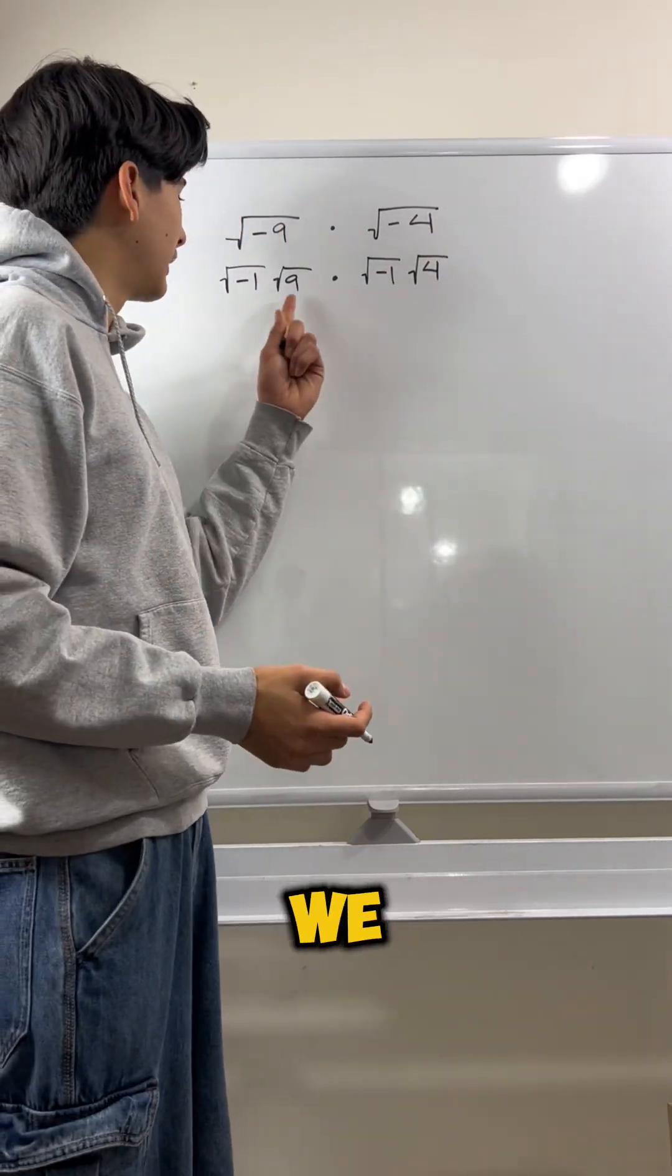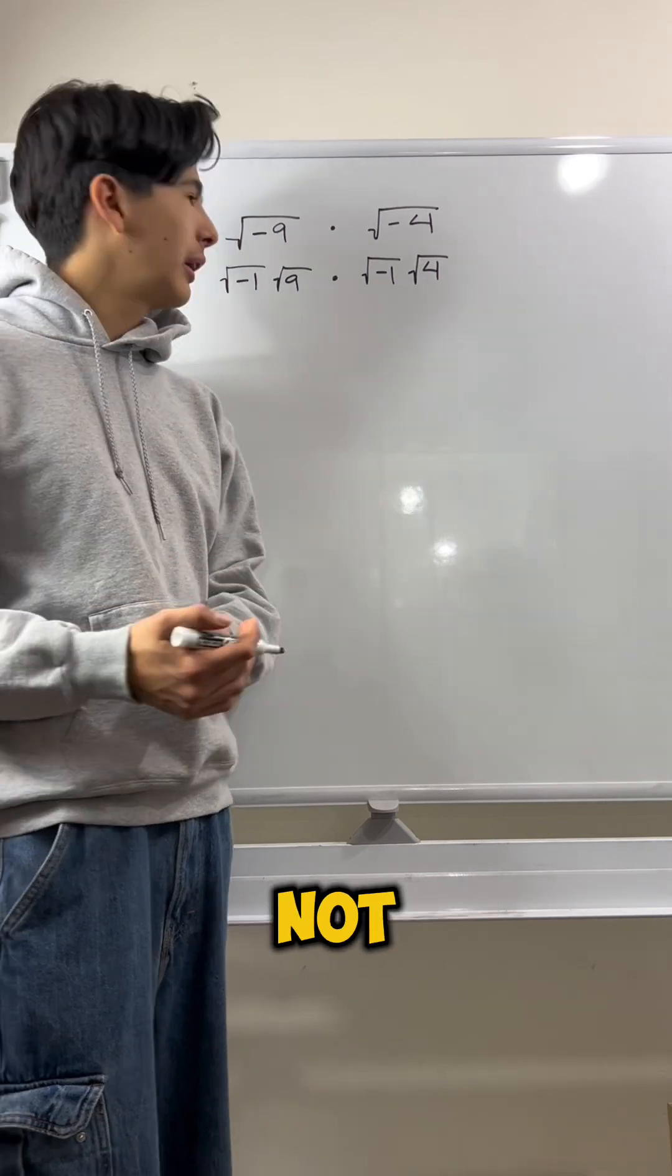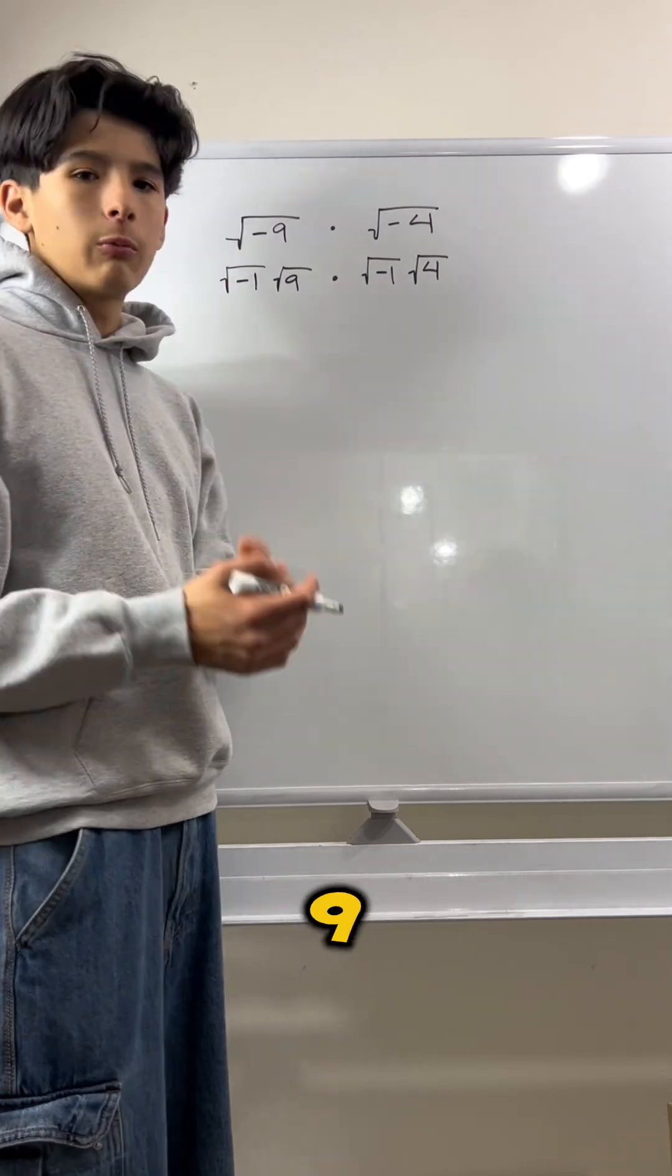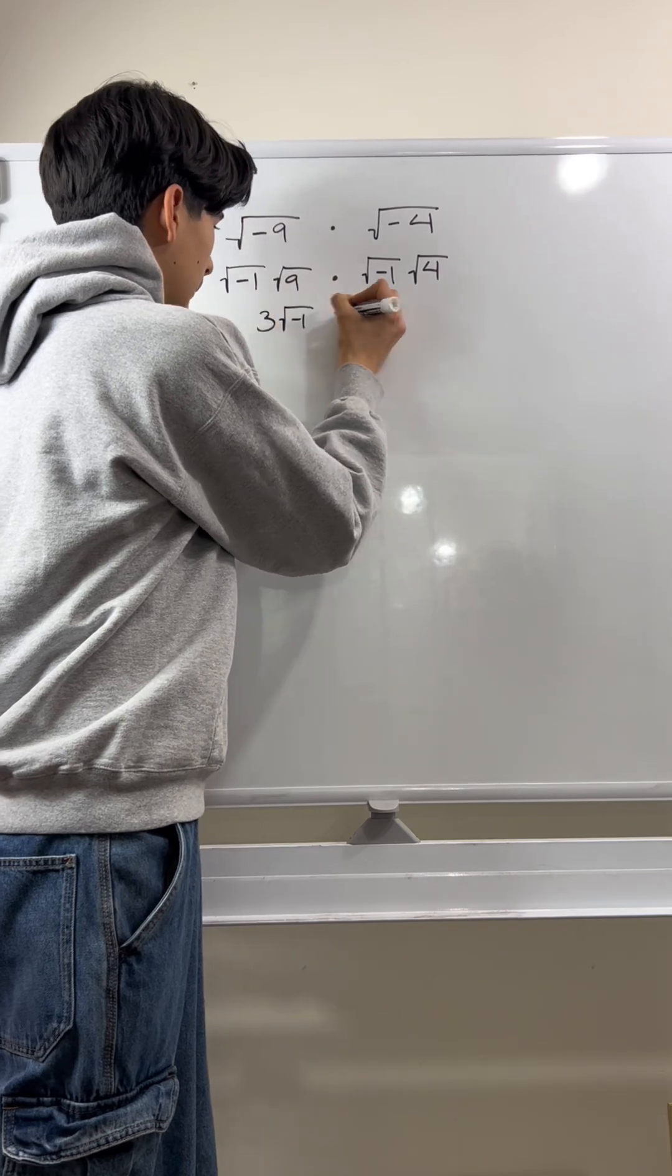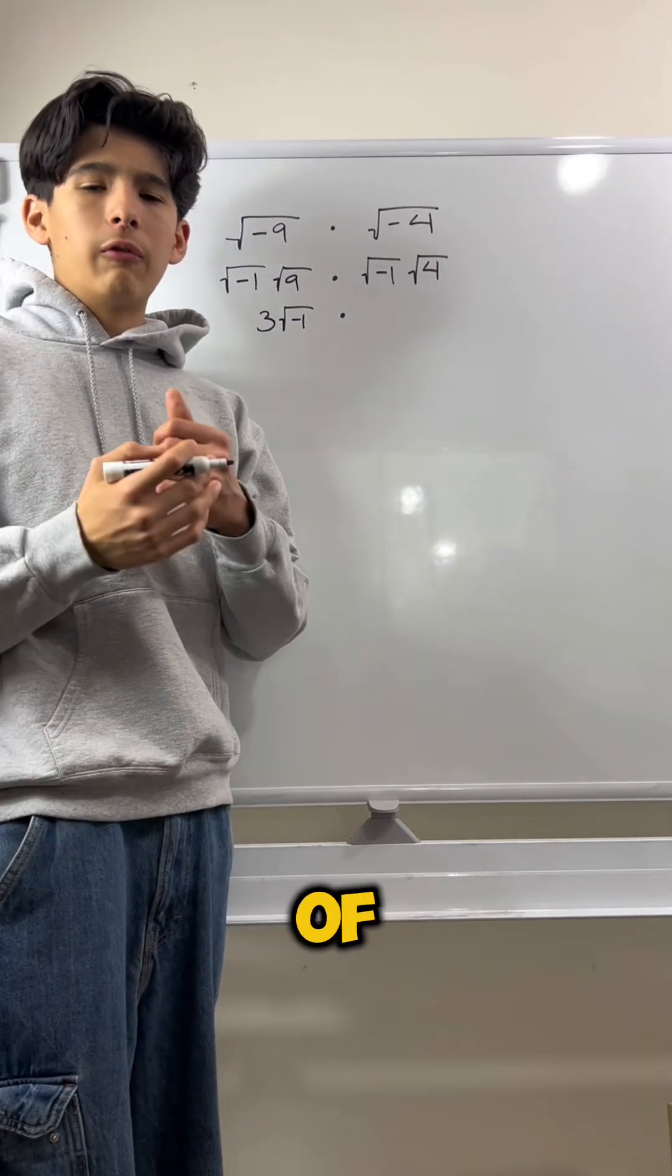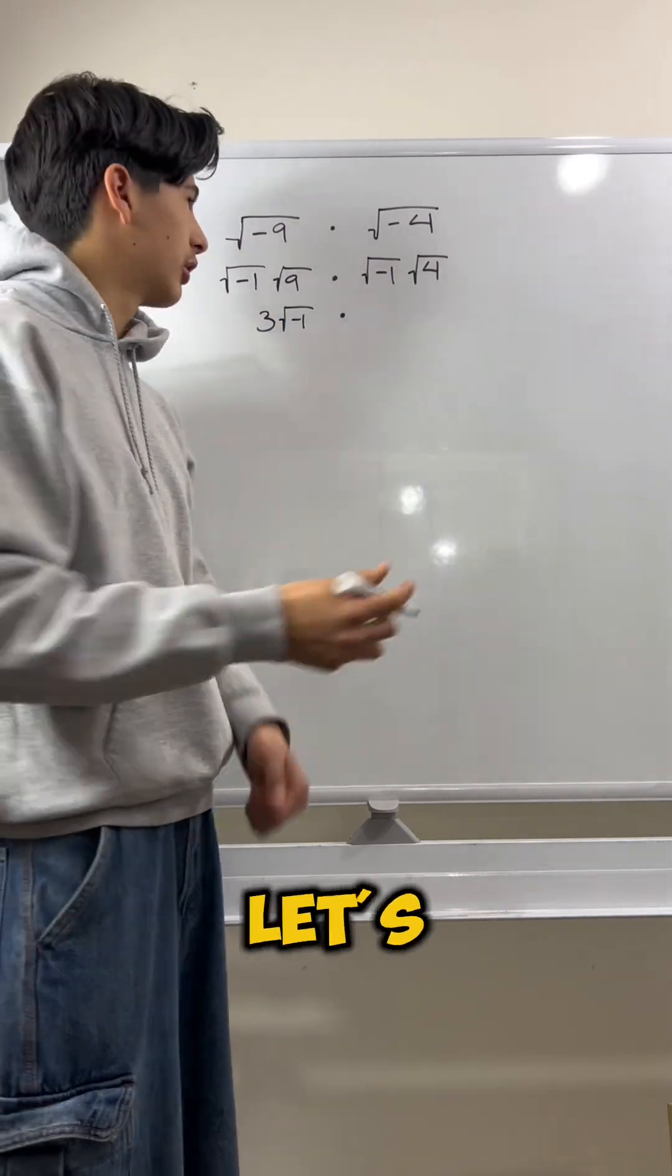Now we simplify this a little bit because now we could take the square roots of these numbers since they're not negative. So, what is the square root of 9? Well, the square root of 9 is just 3. And what is the square root of 4? Well, the square root of 4 is just 2. So, let's write it like that.